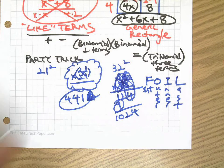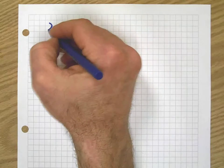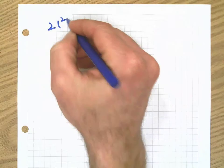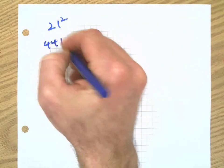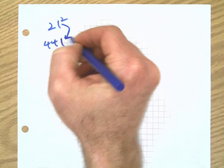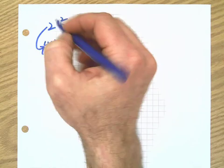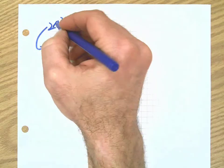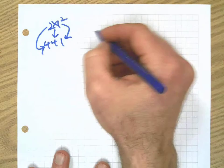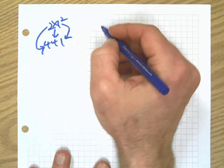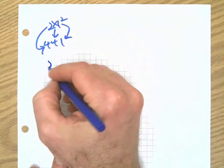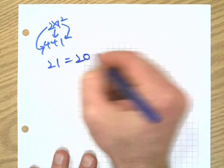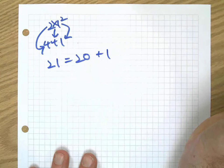FOIL is first, outer, inner, last. You can kind of see that happening. There's the first, there's the last, and then our little cross-section in the middle there, that's the inner and the outer, so to speak. So what does this have to do with multiplying binomials? Here's what it has to do with multiplying binomials. Let's take that first example of 21 squared, where we got 441, right, because we squared the one, we squared the two, and then we did two times one plus two times one.